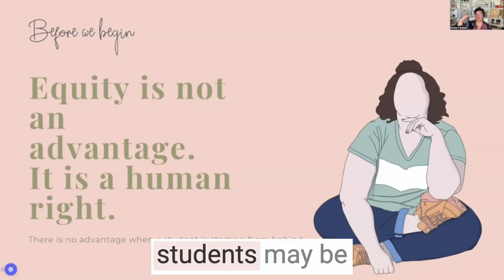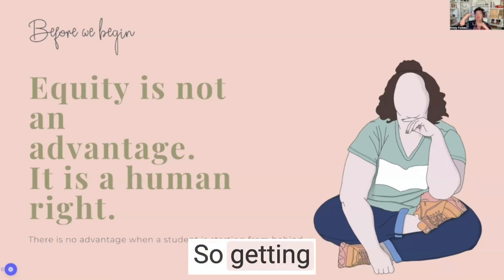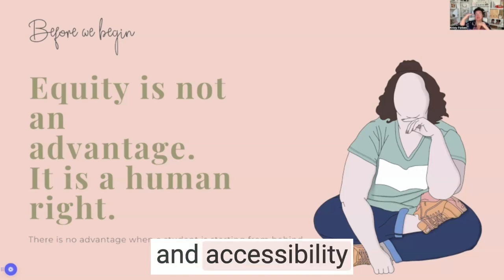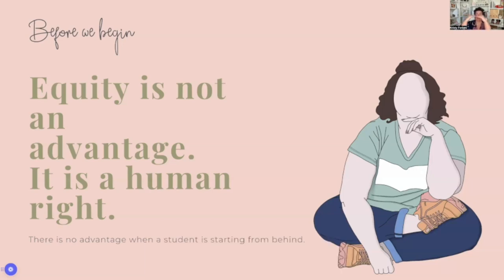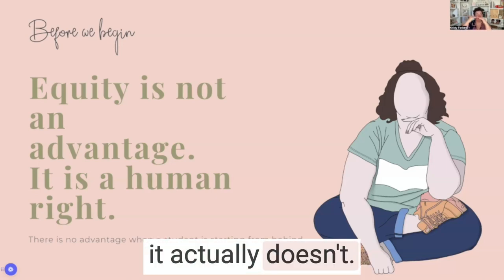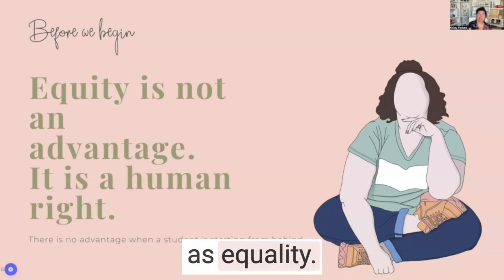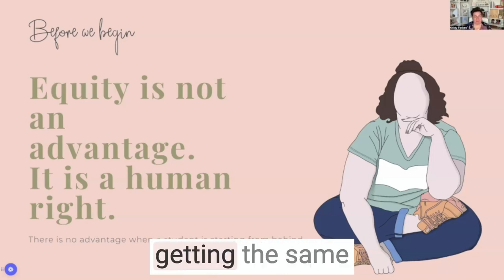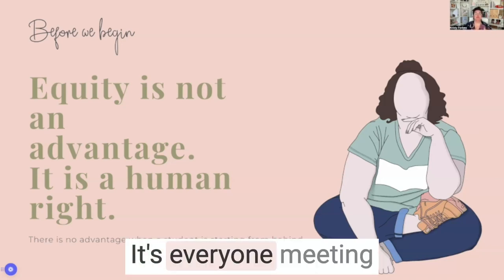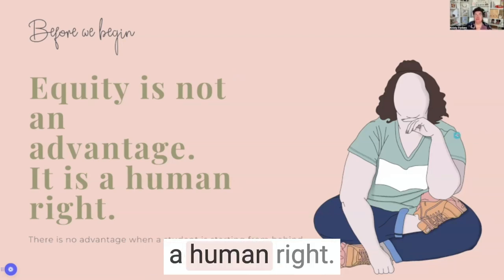Where typical students may be starting here, we're down here — so there's no advantage. Getting appropriate accommodations and accessibility sometimes gives us a better starting point, but more often than not it actually doesn't. Equity is not the same as equality. It's not everybody getting the same thing the entire journey — it's everyone meeting those outcomes in ways that work for them, and it is a human right.